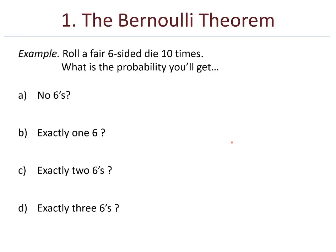The Bernoulli theorem. Let's start off with an example. Say we roll a fair six-sided die ten times. What's the probability you'll get no sixes, one six, two sixes, three sixes? How about no sixes? That means that in ten rolls of the die, not a single six ever appears. So every slot represents some outcome other than six. There are five-sixths probability for each blank, and that happens ten times, so five-sixths to the tenth. That's our solution.